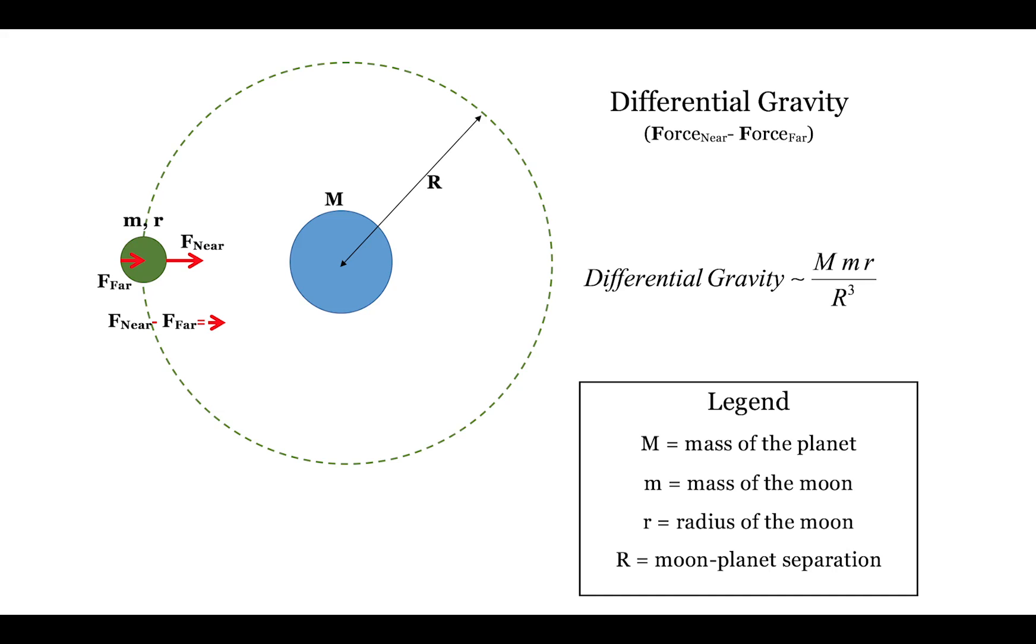This differential gravity depends upon the mass M of the planet, the mass m of the moon, the radius r of the moon, and inversely as the cube of the moon-planet separation R. Note that the separation cubed factor dominates. Tidal forces are only large for objects nearby each other.